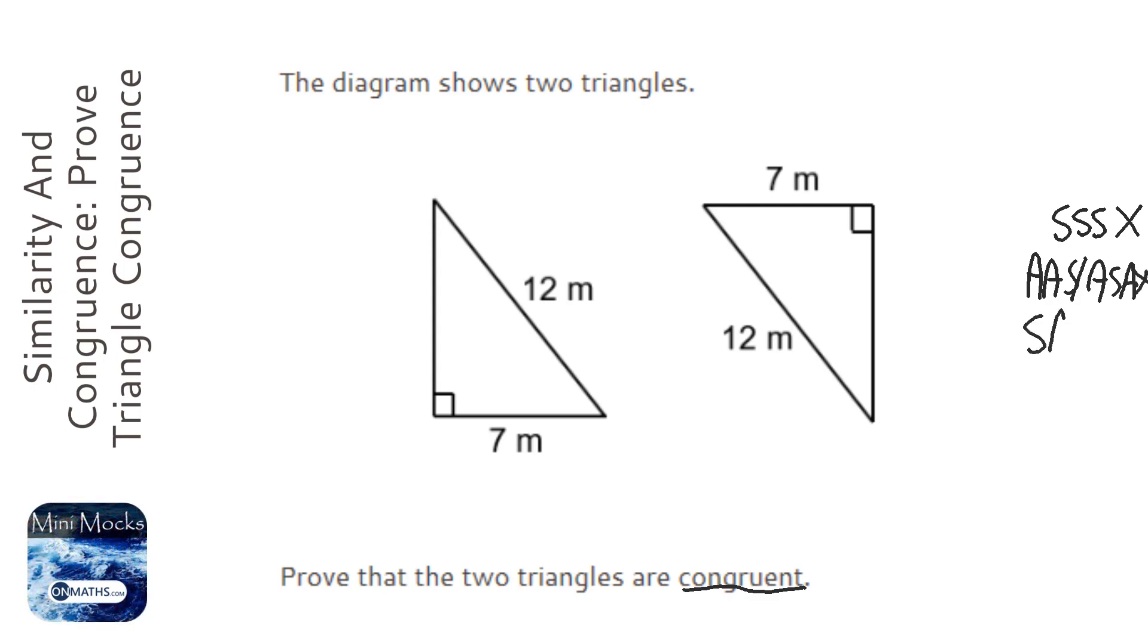The other one is side, angle, side. Well, we have a side and an angle and another side, but the problem is the angle needs to be between the sides, and here the 90 degrees isn't between those two sides, so it's not going to be that one.